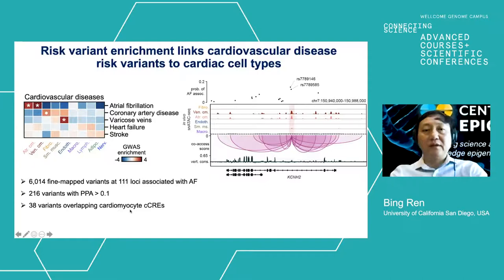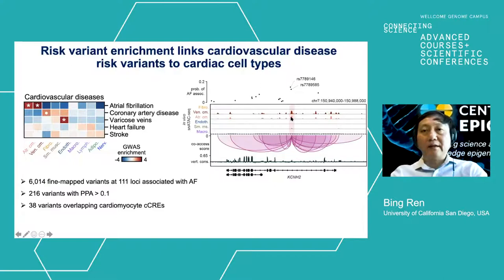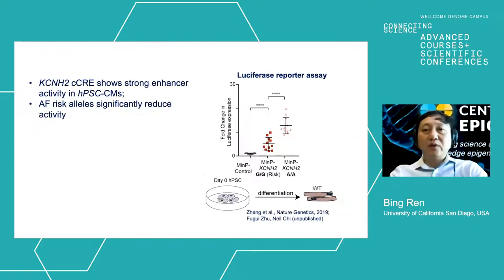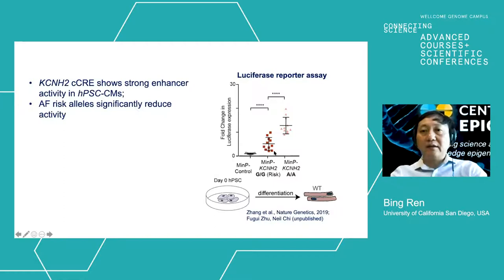We took previously mapped GWAS studies and performed fine mapping from 111 loci associated with atrial fibrillation. We found that about 216 variants have a likely causal role in this process through the fine mapping analysis, and 38 of those overlap with cardiomyocyte open chromatin elements. Two of them are listed here. They are located in the intron of a potassium channel-encoding gene called KCNH2. We asked whether these two variants indeed perturb the potential enhancer and therefore cause misregulation of KCNH2 expression. To test this, we again collaborated with Neil Chi, whose lab has established an in vitro human ESC differentiation system where embryonic stem cells can be robustly differentiated into cardiomyocytes in vitro.